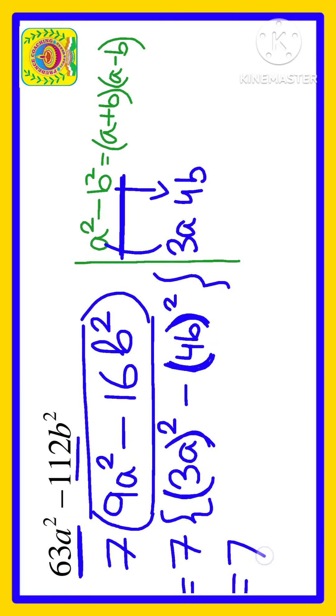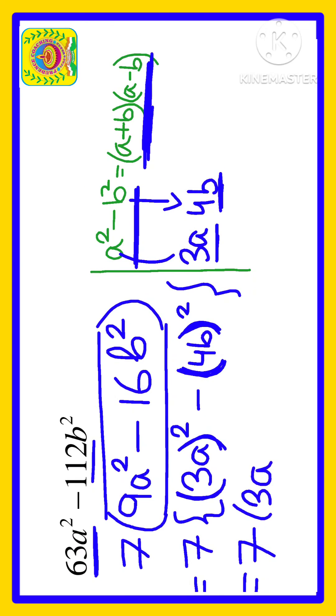We have 7 in common, so write 7 as it is. We can write this as (a + b)(a - b), but here a is 3a and b is 4b. So let us write: 7 times (3a + 4b) times (3a - 4b). This is our final answer.